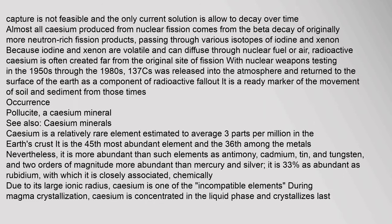Almost all caesium produced from nuclear fission comes from the beta decay of originally more neutron-rich fission products, passing through various isotopes of iodine and xenon. Because iodine and xenon are volatile and can diffuse through nuclear fuel or air, radioactive caesium is often created far from the original site of fission. With nuclear weapons testing in the 1950s through the 1980s, ¹³⁷Cs was released into the atmosphere and returned to the surface of the earth as radioactive fallout, serving as a ready marker of soil and sediment movement.